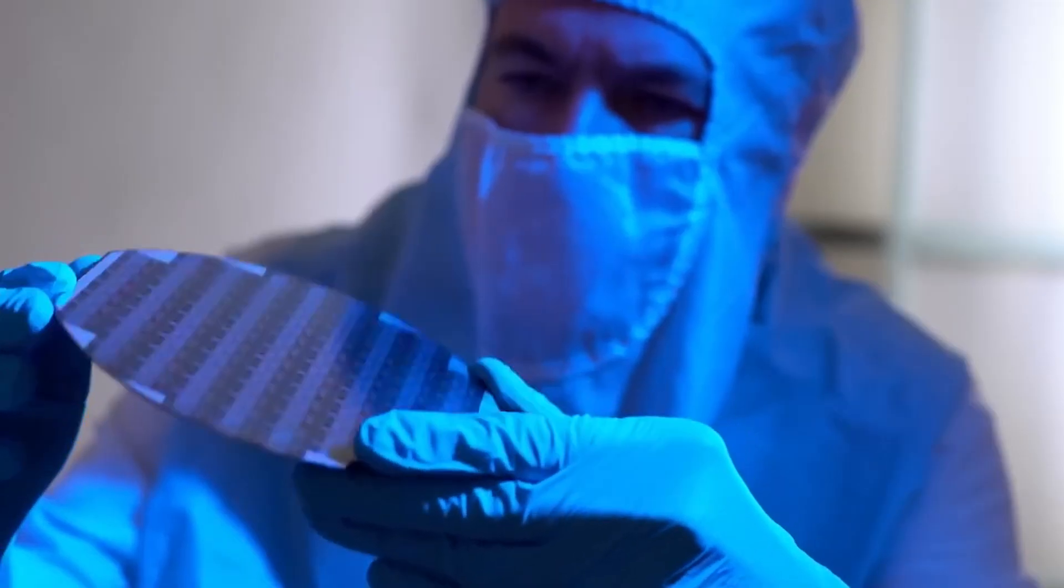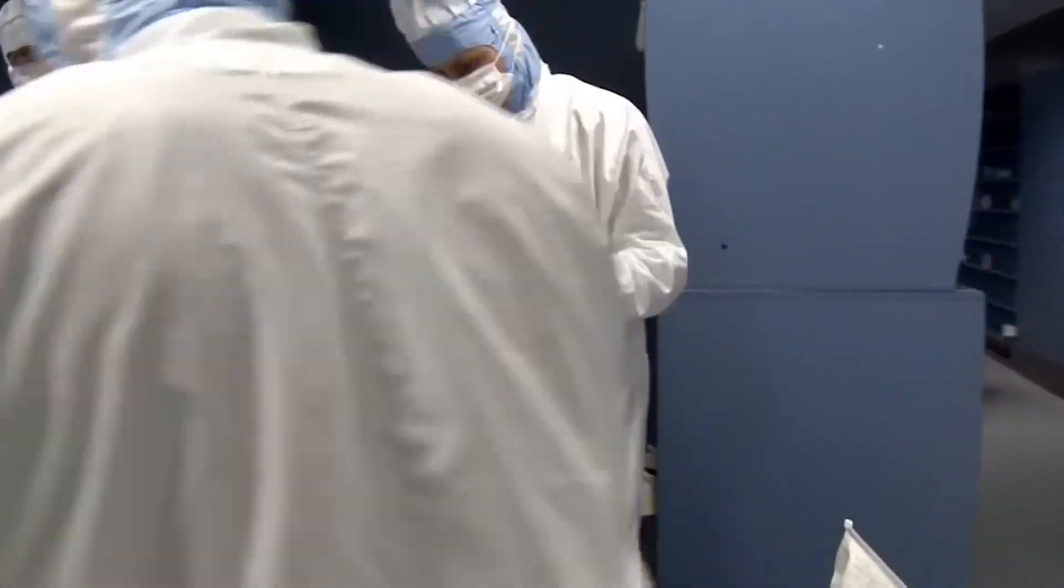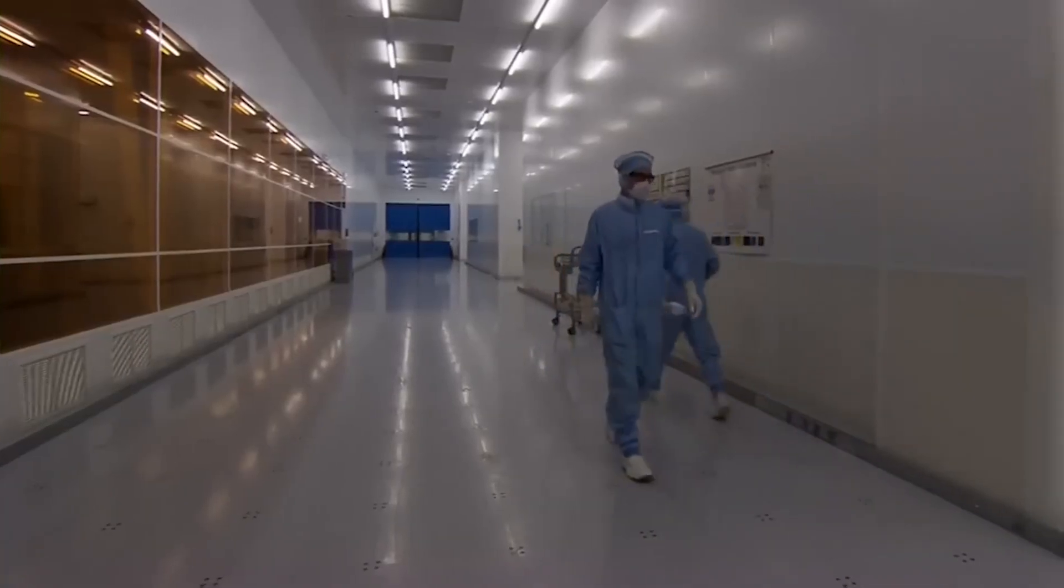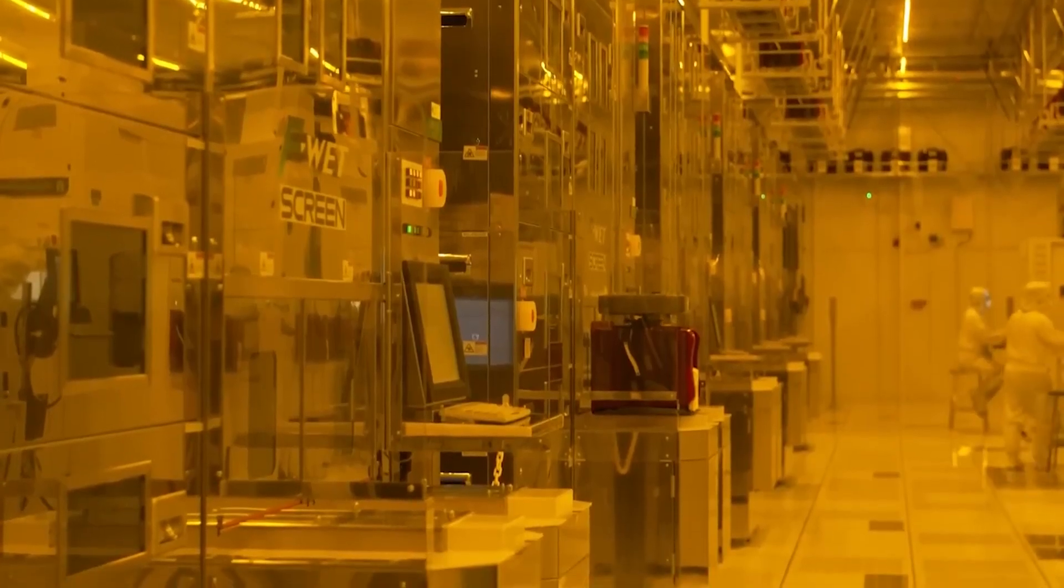So before workers start working in a factory, they must put on a protective suit. The manufacturing process takes place in a clean room with nearly 18,000 square meters thanks to 12,000 tons of air conditioning equipment.